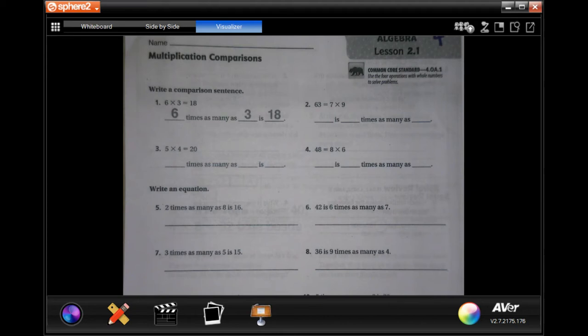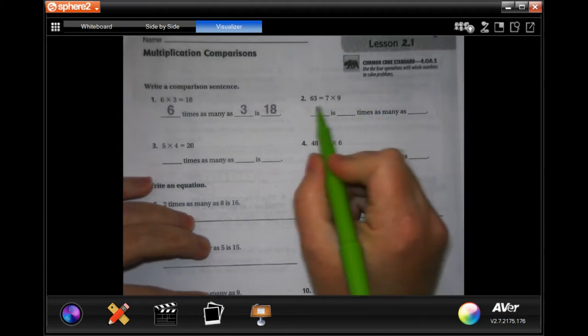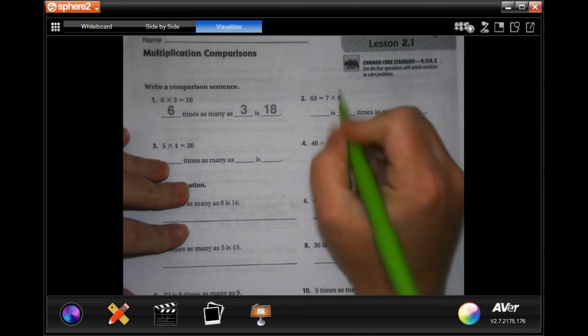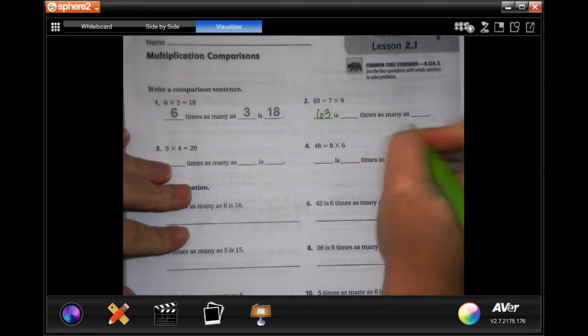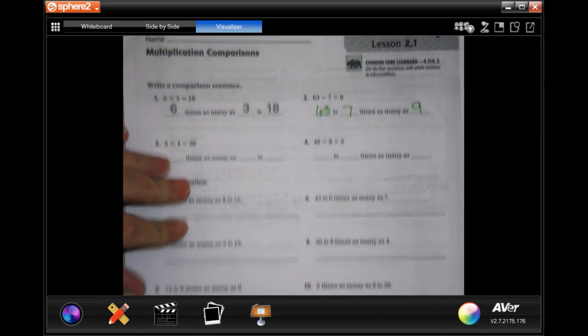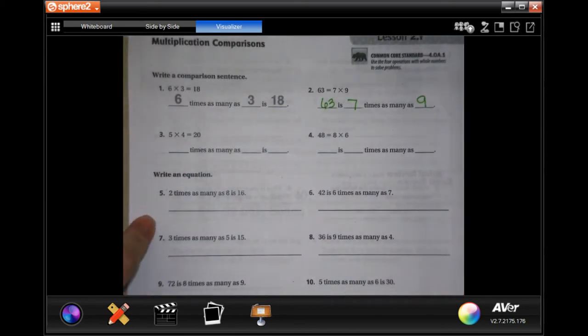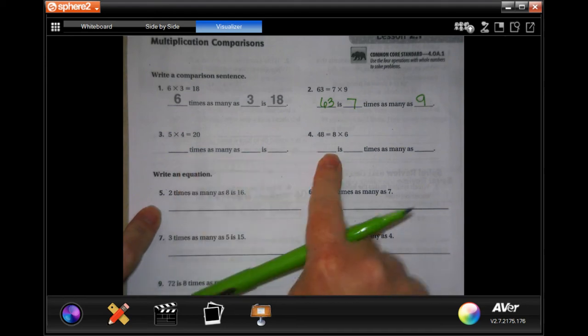So this actually tells you what the problem is that you're writing down. You're going to be writing in 63 is seven times as many as nine. Super easy. Now you're going to do three and four.